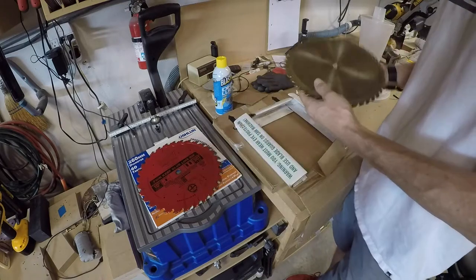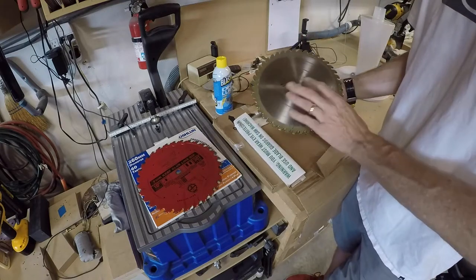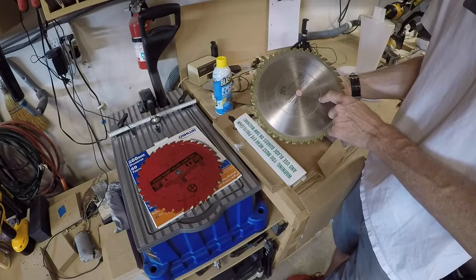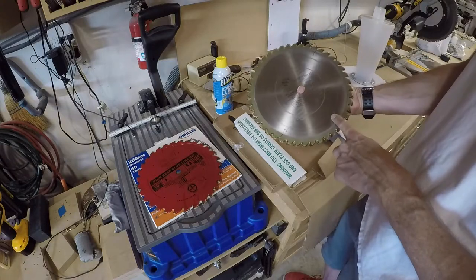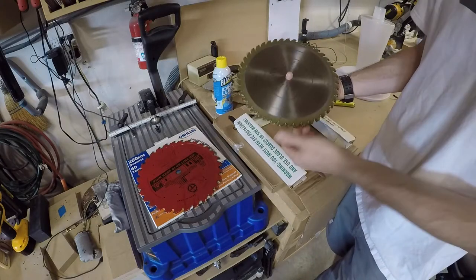That's my glue line rip blade. This is actually a weird blade, a 44-tooth. This was my very first blade that I had with my Delta contractor saw.